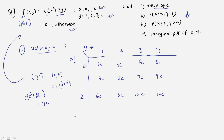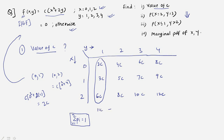By the probability definition, the sum of all probabilities equals 1. Adding all terms column by column: 6+3+2 = 11c, then 8+5+4 = 17c, then 23c, then 29c. So 11c + 17c + 23c + 29c = 1, giving c = 1/80.